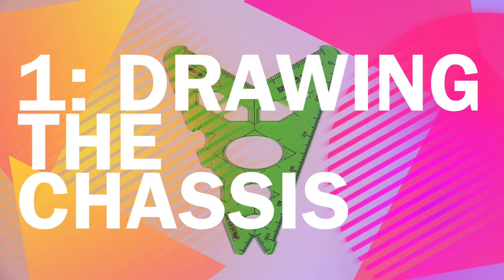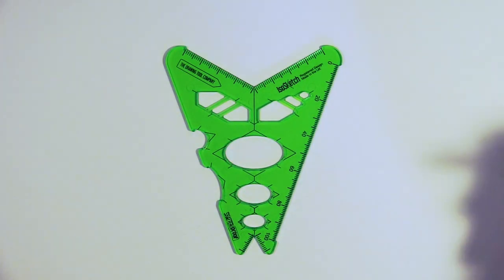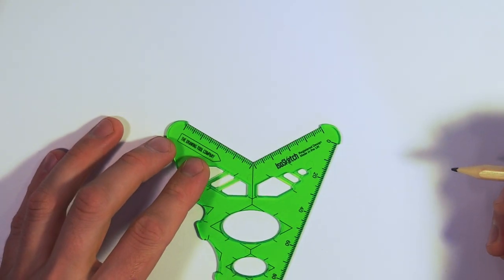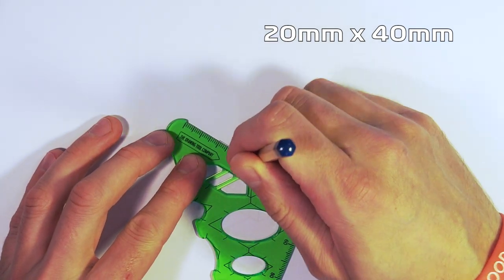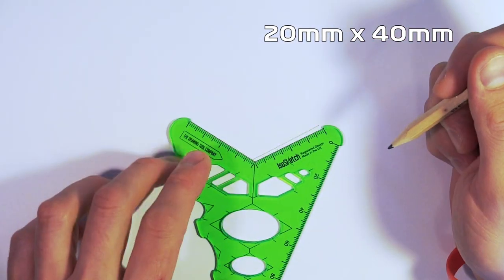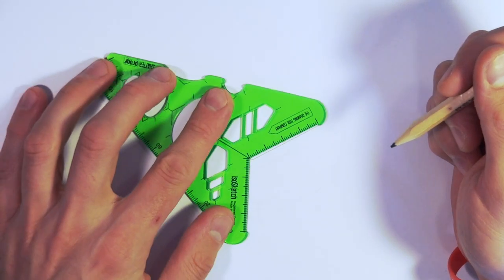Hello there designers! Today we're going to learn how to draw the chassis for our F1 in Schools Primary STEM Project Racer. We're going to start off using the measurements on the screen and drawing the back part of our chassis using the ISO Sketch 3D drawing tool.